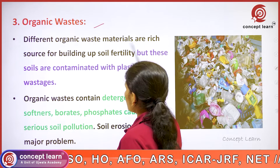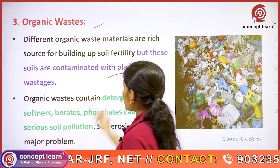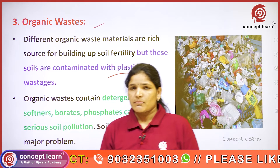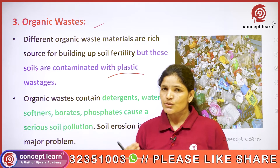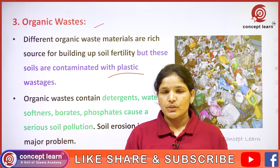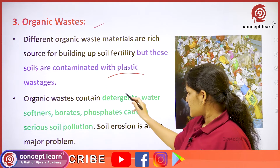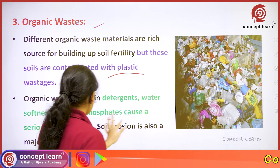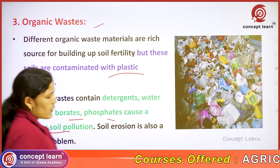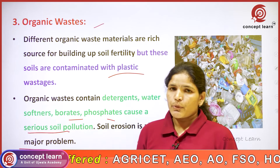Different organic waste materials are rich sources for building up soil fertility, but these soils are contaminated with plastic waste. Generally, organic waste increases soil fertility, but if organic waste and plastic combine, pollution increases. Organic waste contains detergents, water softeners, borates, and phosphates, which cause serious soil pollution. Soil erosion is also a major problem.